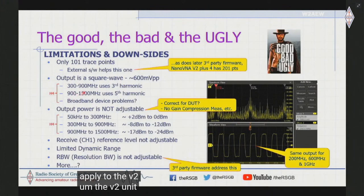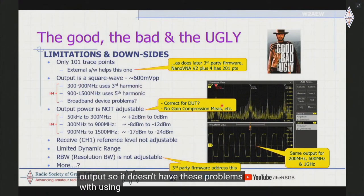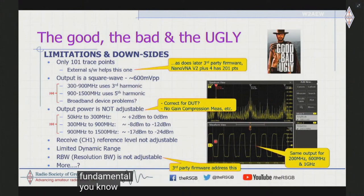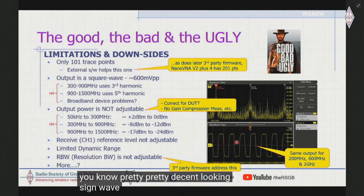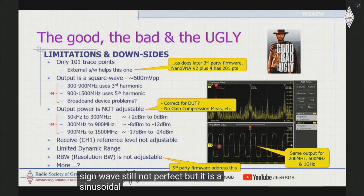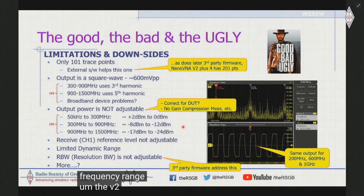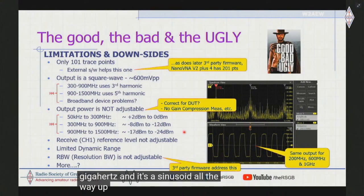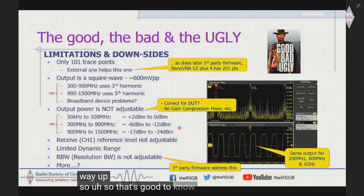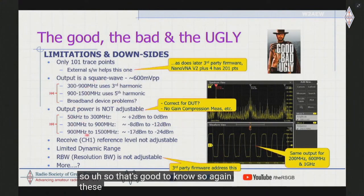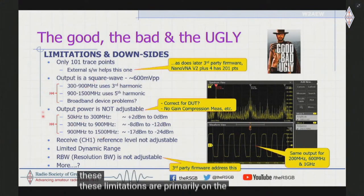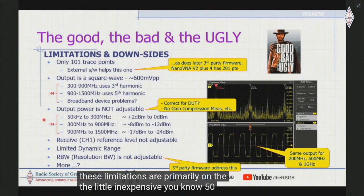The V2 unit does use a sinusoidal output so it doesn't have these problems with using harmonics. It actually uses a fundamental, pretty decent looking sine wave. The V2 plus 4 goes up to four gigahertz and it's sinusoidal all the way up. So that's good to know. These limitations are primarily on the little inexpensive $50 units.